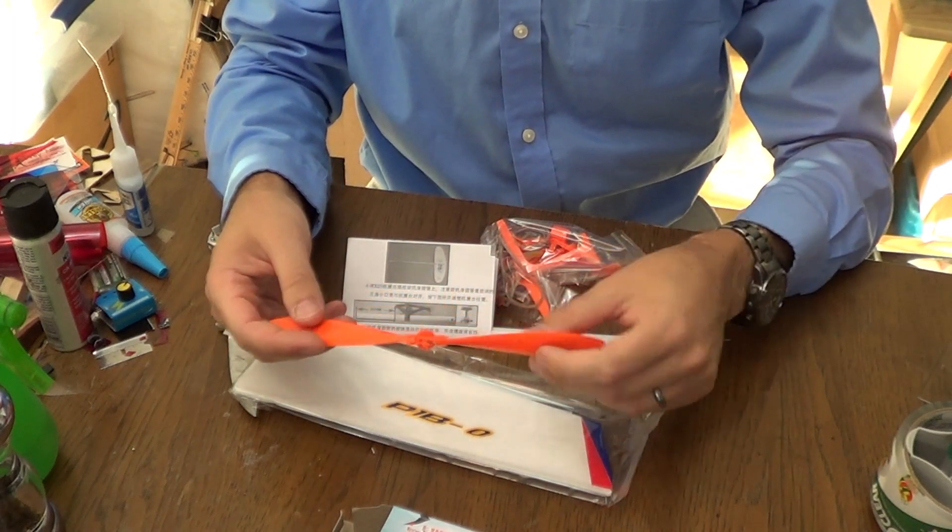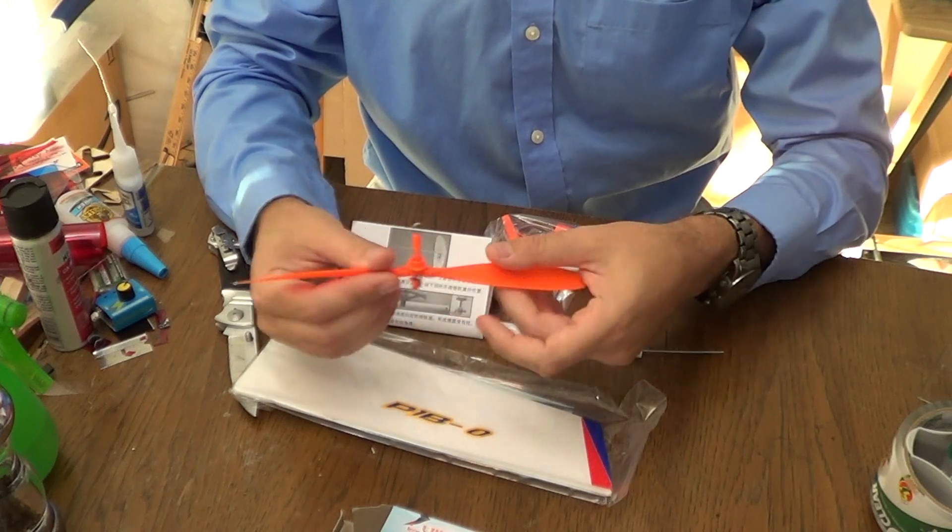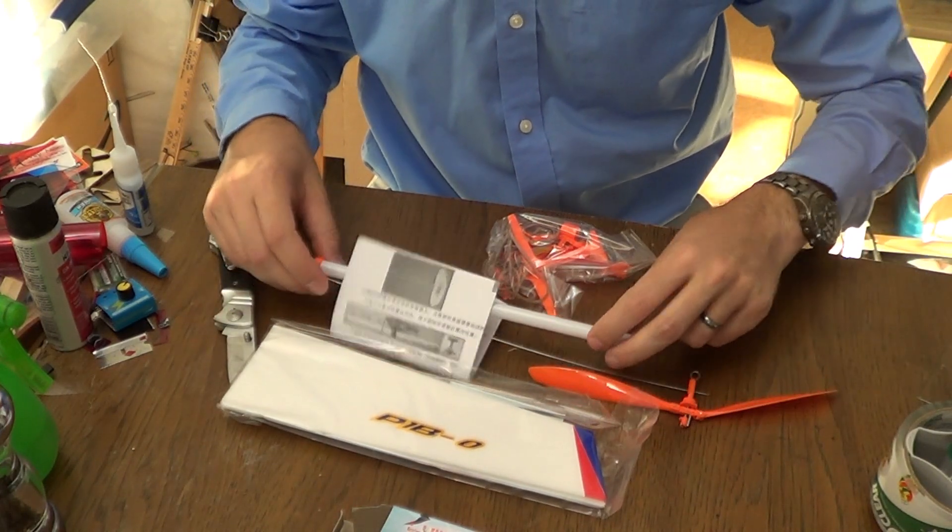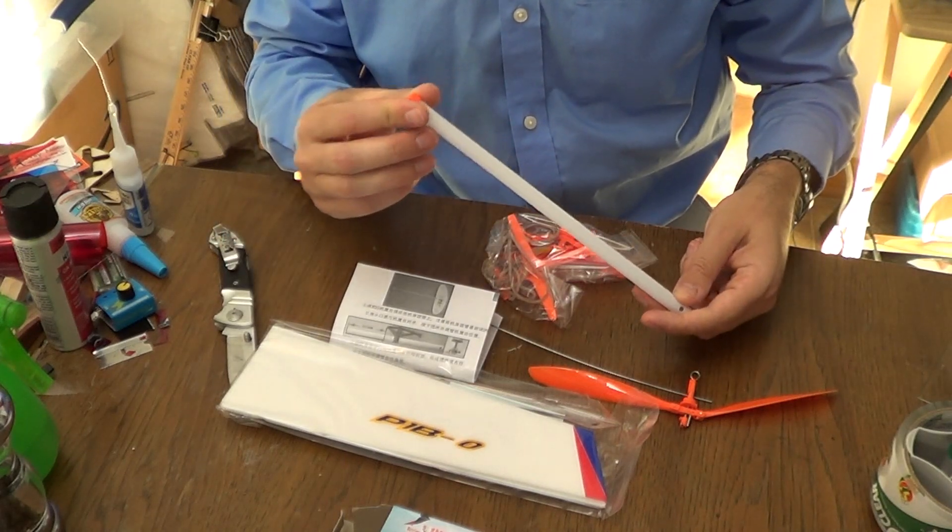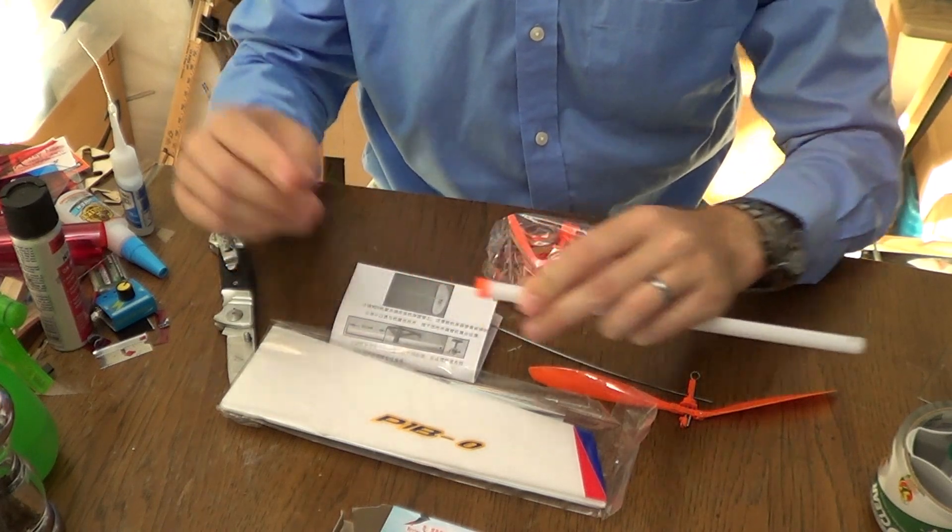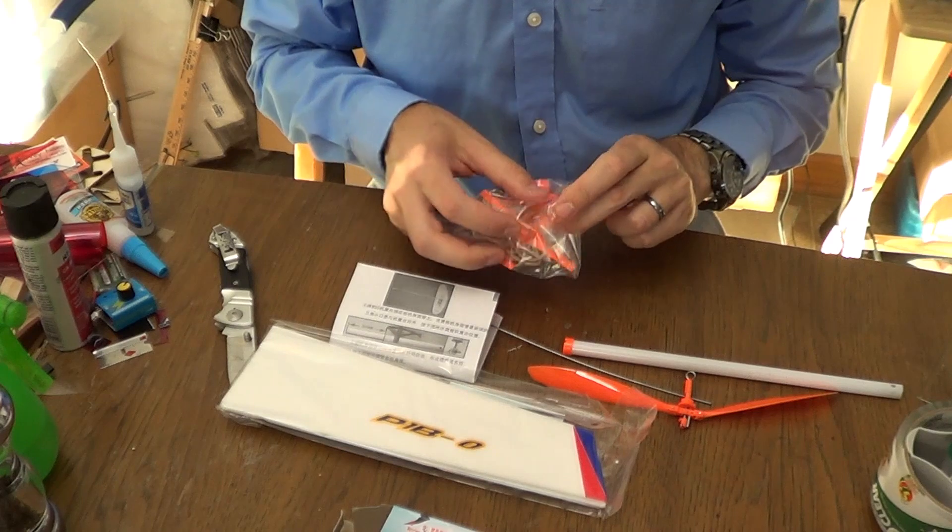A couple things you want to look for: make sure you have your propeller assembly. This is a reverse Montreal stop folding propeller. It is a fully functional propeller of that type. You'll have a little fuselage tube. Note that this little collar may or may not be in place. Do not glue it in place at this time. That's one of the later steps.